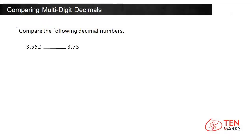Comparing multi-digit decimals. In this lesson, we'll understand how to compare decimal numbers. To compare numbers, we always begin with the highest place value and compare the corresponding digits. The number with the greater digit is greater.